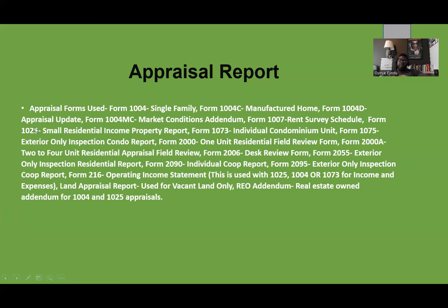Form 1025 is a small residential income property report, and that's different from a condominium. Form 1073 is for an individual condominium unit. Form 1075 is for the exterior only of a condominium report — meaning the appraiser doesn't go inside the property, doesn't do a full interior review or take interior pictures. It's strictly focused on the exterior of the condominium.